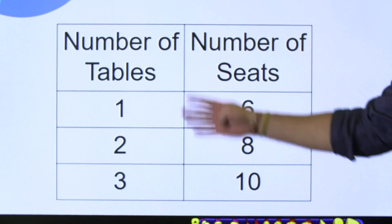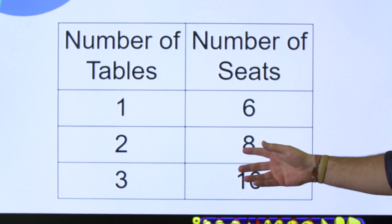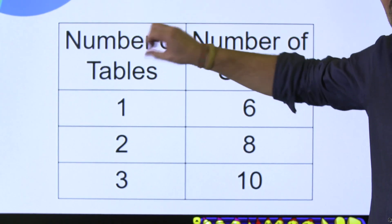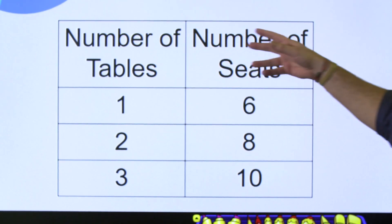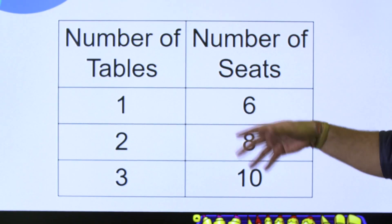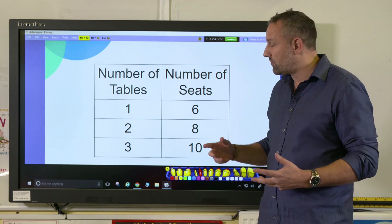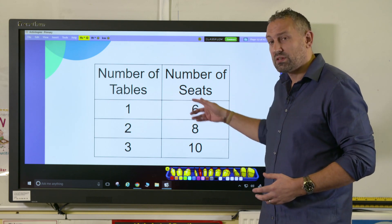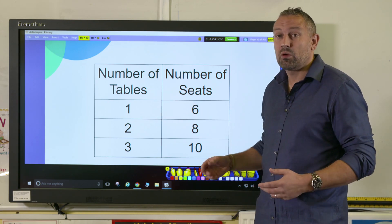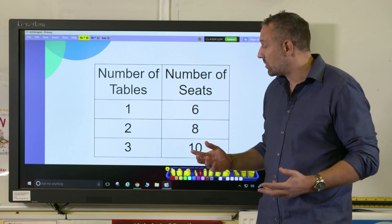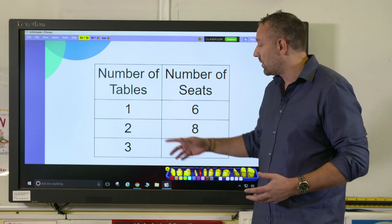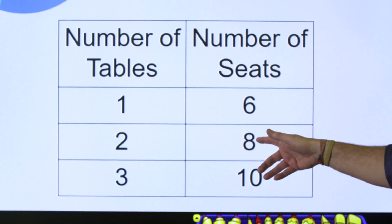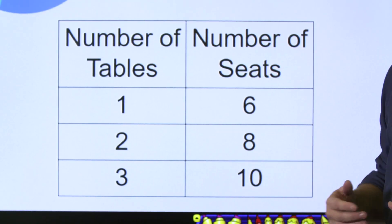You can see here we've got the number of tables and the number of seats. We call this the input and this is the output, because if we have one table we have six seats. Getting them to explore and see what is the difference—how do we get from one to six? An obvious answer would be that we add five, which is great, but then does that rule carry through? Two add five—does that equal eight? It's really useful if children are starting out in algebra that you introduce them to the fact that the function from the input to the output may have two steps.